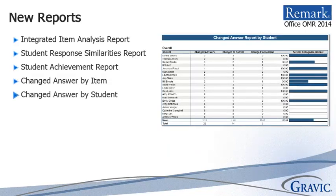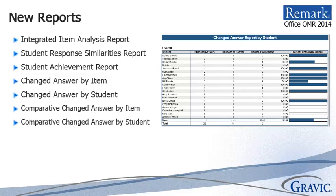The Changed Answer by Item and Student Reports allow teachers to show questions where answers were changed by the student on the test. Remark Office OMR 2014 is able to detect these changed answers when the Ignore Large Marks feature is turned on. When activated, the software will ignore any X'd-out responses and detect the ones that are completely filled. You can also use comparative versions of these reports to view information by specific criteria from your dataset.